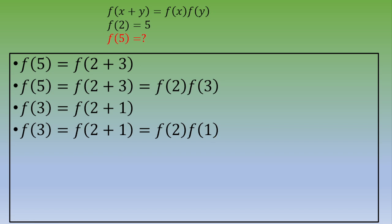So now, if we put these two together, we end up with f of 5 equals f of 2 times f of 2 times f of 1. And we know the value of f of 2, so we would like to know the value of f of 1.